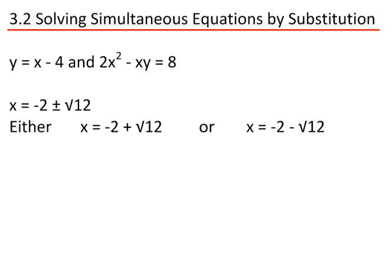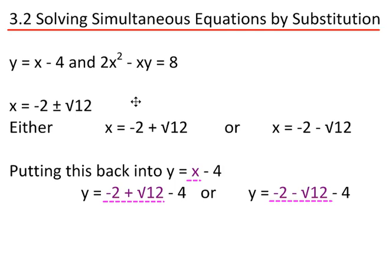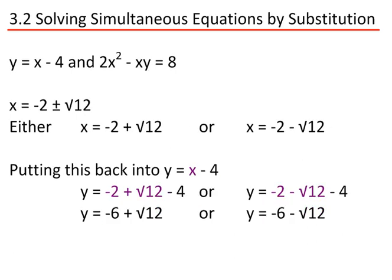I now need to find the corresponding values of y. I can use either of the two equations, but the simpler one — y equals x minus 4 — is what I'll use. Substituting both values of x in: y equals minus 2 plus the square root of 12 minus 4, or y equals minus 2 minus the square root of 12 minus 4. This gives y equals minus 6 plus the square root of 12, or y equals minus 6 minus the square root of 12.